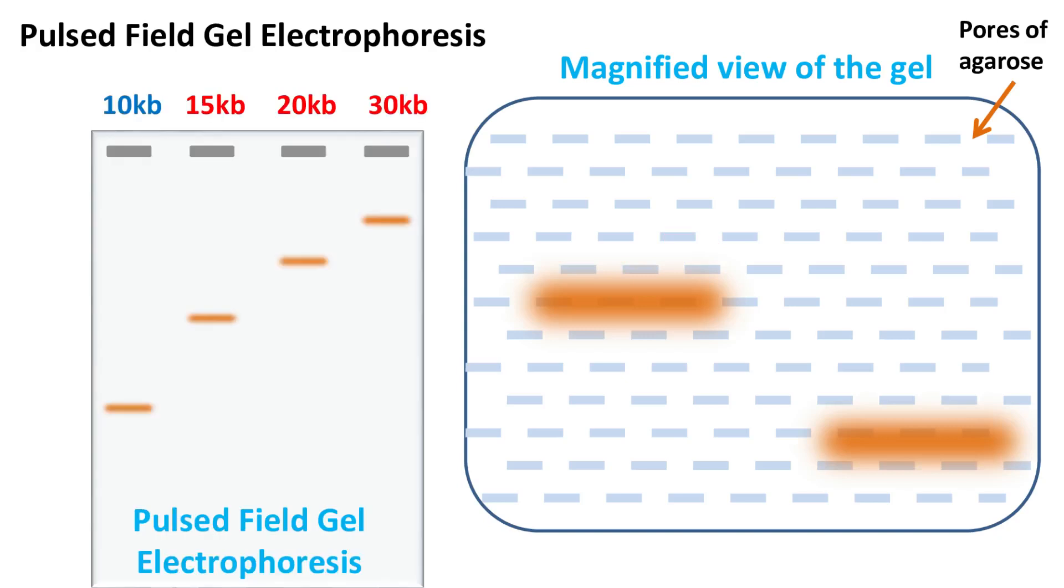This makes it possible to separate and resolve large DNA fragments. Unlike conventional agarose gel electrophoresis which takes about 20 minutes to complete, Pulsed Field Gel Electrophoresis takes several hours for completion.